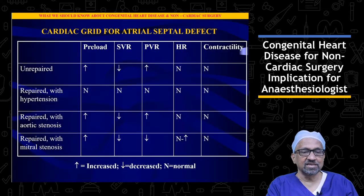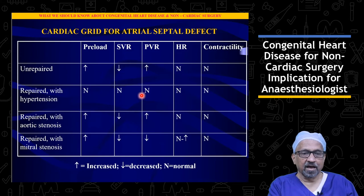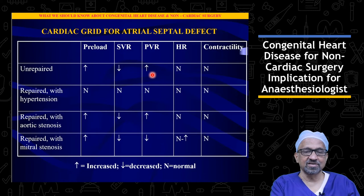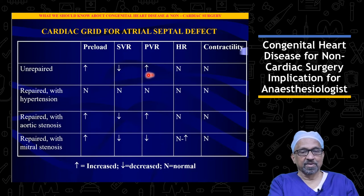The management strategy for patients with unrepaired atrial septal defect coming for non-cardiac surgery: the systemic vascular resistance is decreased, pulmonary vascular resistance is maintained, and heart rate and contractility are also maintained. The pulmonary vascular resistance is not decreased because if it is decreased, there may be relative overflow of blood to the pulmonary vascular tree leading to systemic hypotension and systemic hypoperfusion.